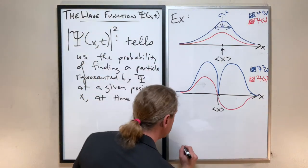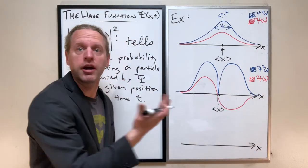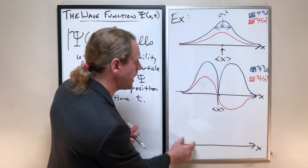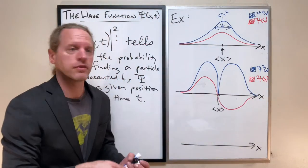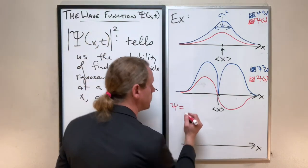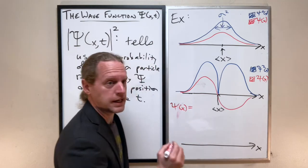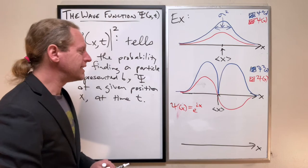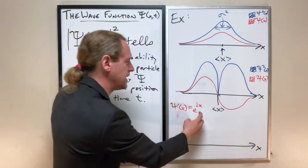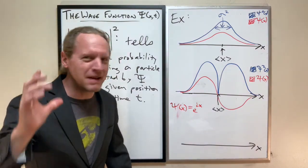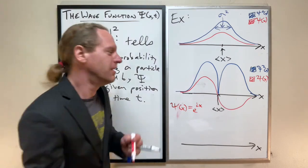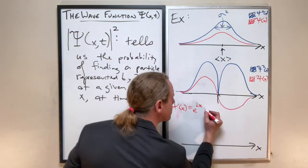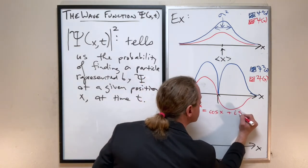For the third example, consider the same x-axis. Let's say psi of x is equal to e to the i·x. For those who haven't seen this before, this is a wonderfully amazing mathematical result that Euler was famous for: e to the i·x stands for cosine of x plus i times sine of x. Electrical engineers use this form more than they use sines and cosines directly — it turns out it's much easier to talk about sinusoidal functions using complex exponentials.